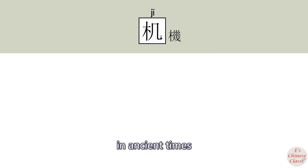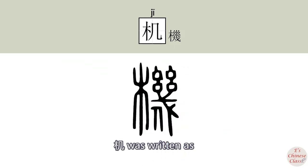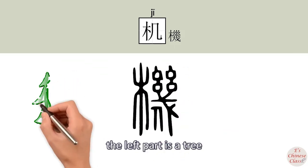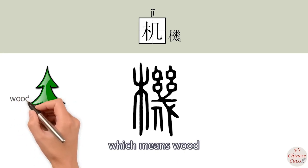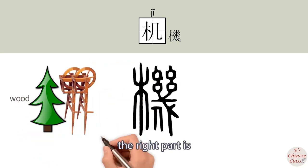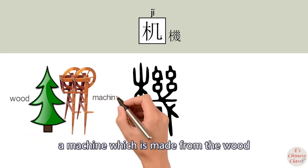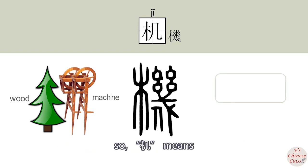In ancient times, 机 was written with the left part being a tree, which refers to wood, and the right part being a machine, which is made from the wood. So 机 means machine, 机器.